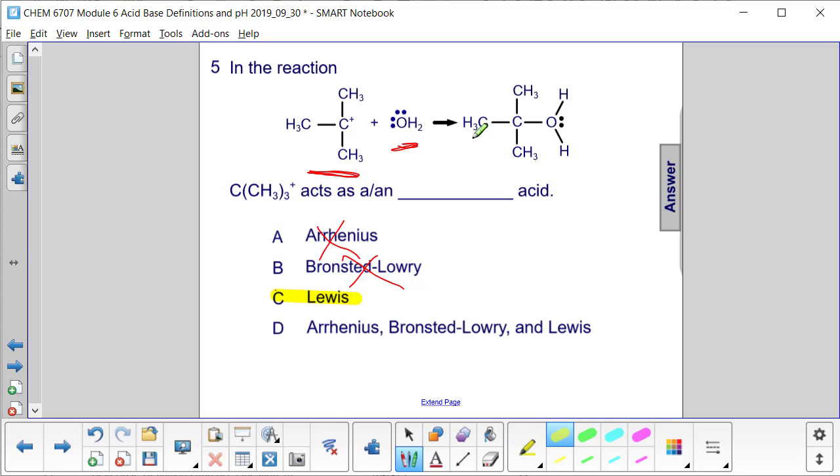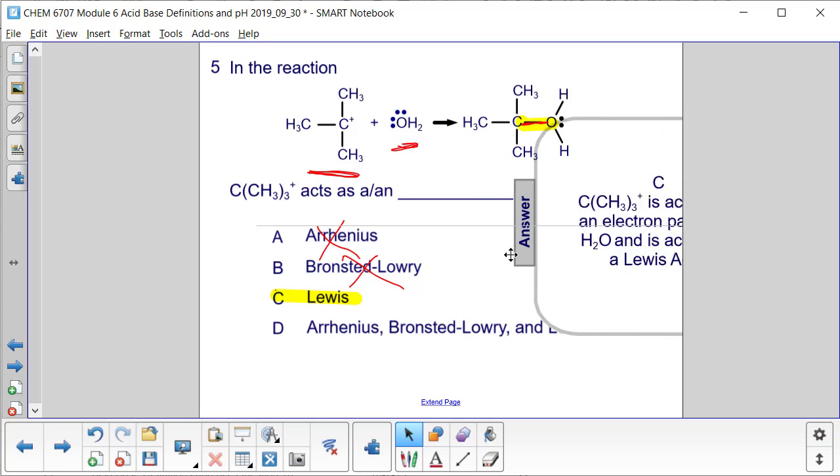Do you see these electrons here on the water? They're shared here, and now this compound, this C(CH3)3+, has accepted a pair of electrons that's now shared between the carbon and the oxygen. So that is known as a Lewis acid.